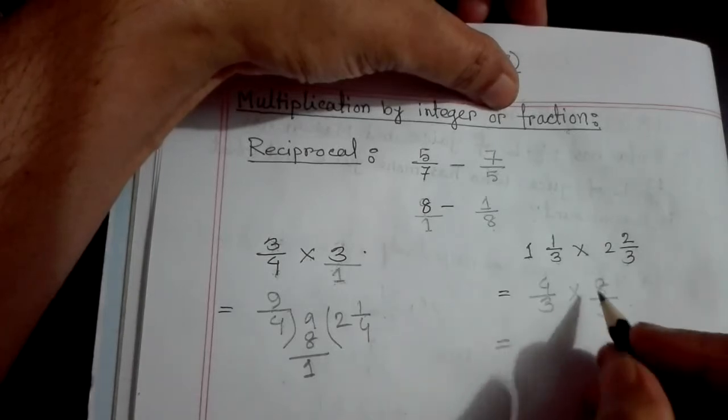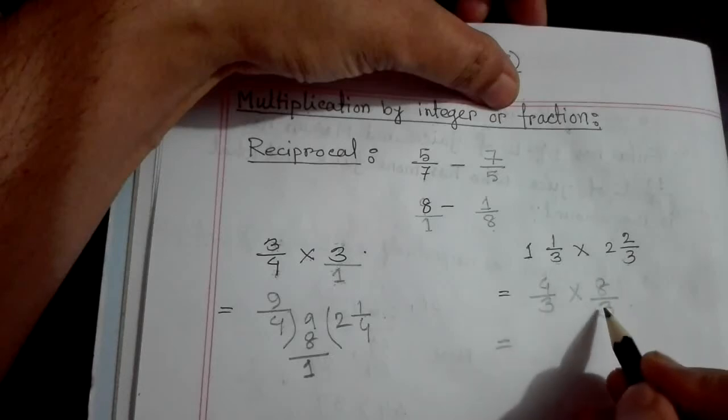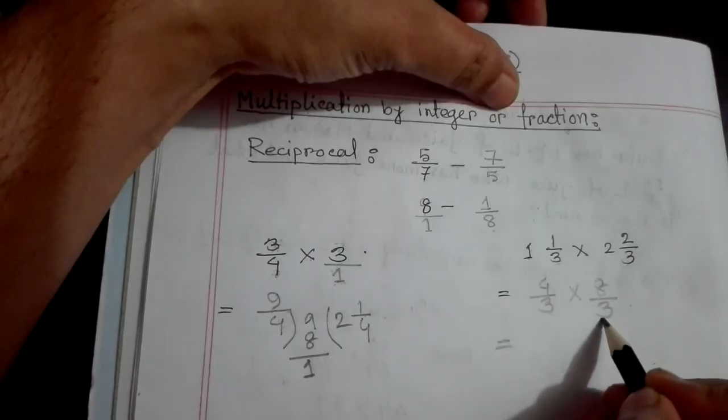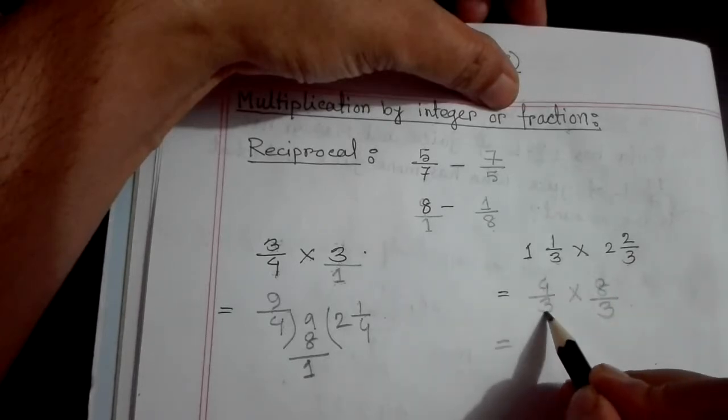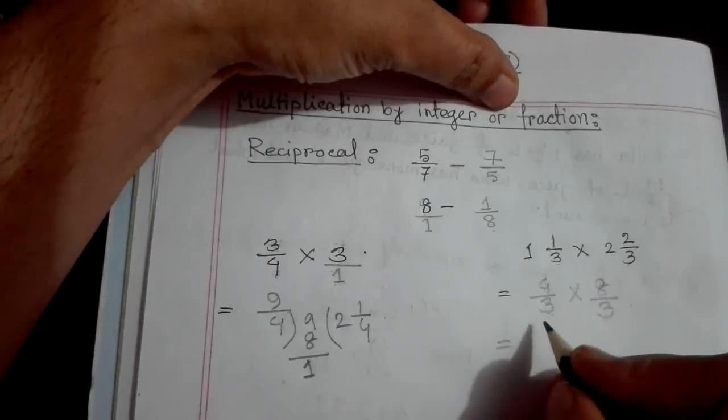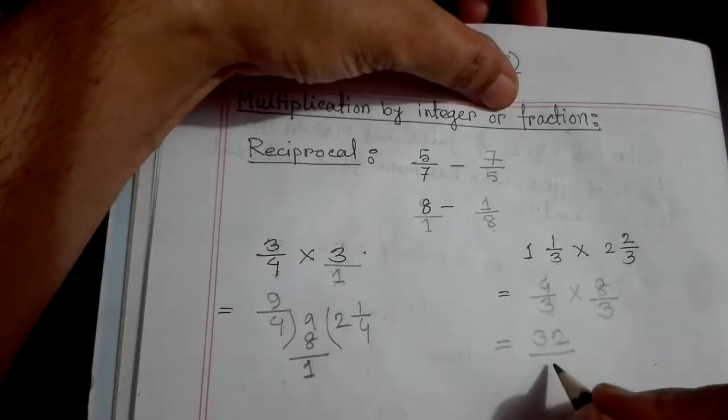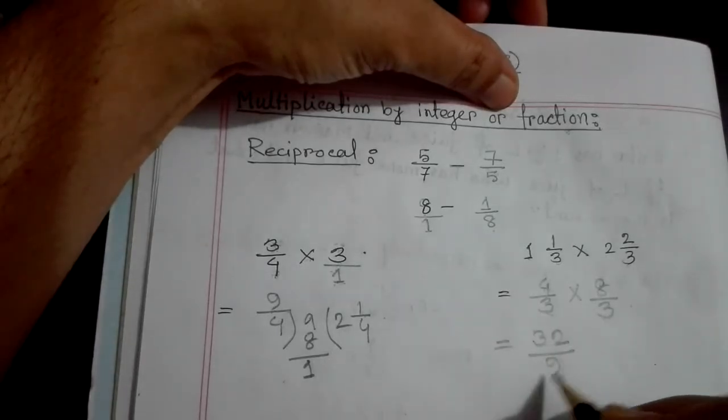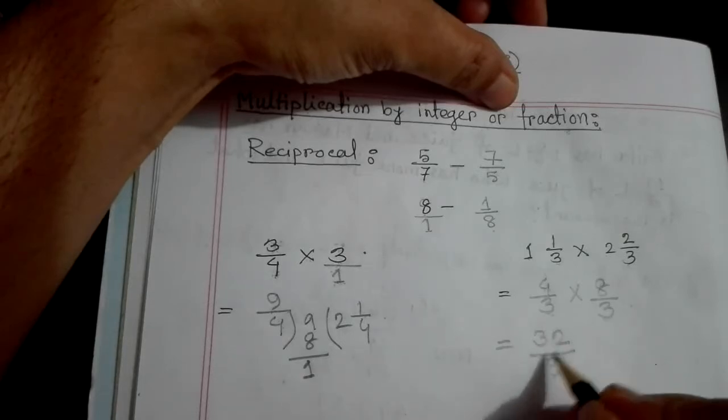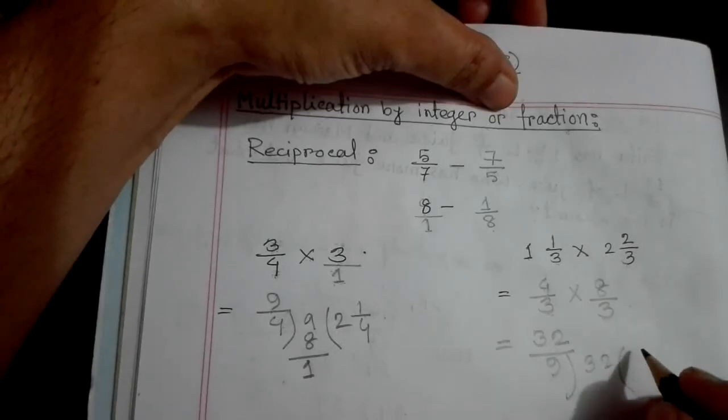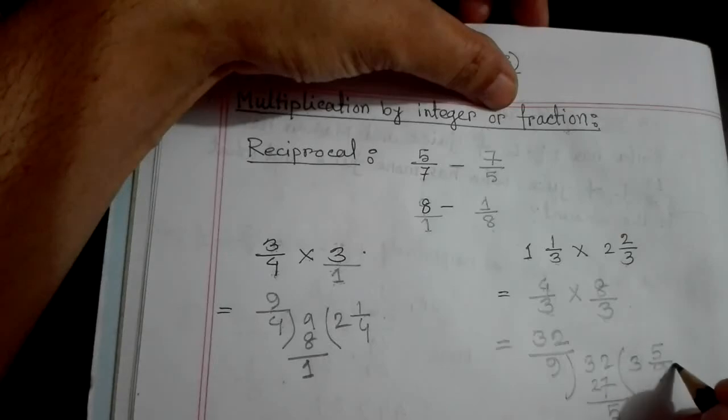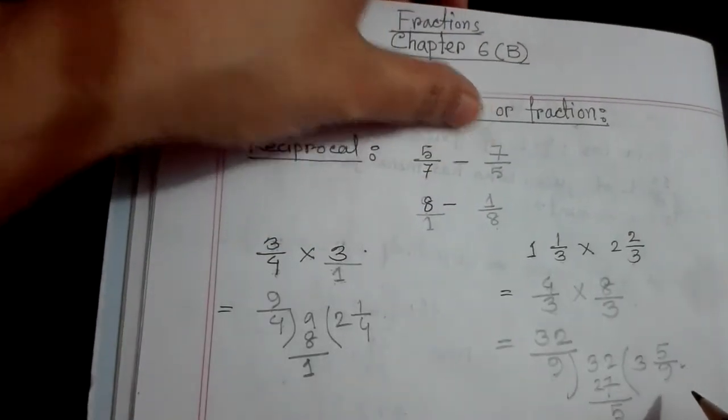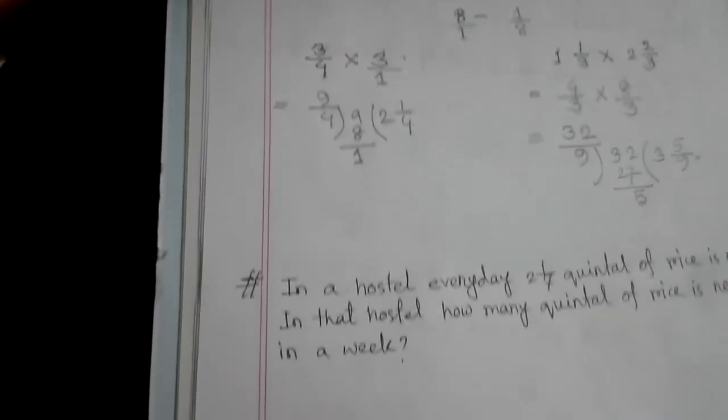First, convert the mixed fractions to improper fractions. Multiply numerator with numerator and denominator with denominator. 4 times 8 is 32, 3 times 3 is 9. So we get 32 by 9. We can convert this improper fraction to mixed fraction: 3 goes into 32 nine times, remainder 5. So the answer is 3 whole 5 by 9.